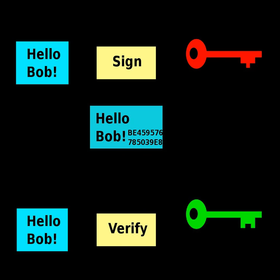G, the key generator, generates a public key P.K. and a corresponding private key S.K. on input 1N, where N is the security parameter. S, the signing algorithm, returns a tag T on the inputs: the private key S.K. and a string X. V outputs accepted or rejected on the inputs: the public key, a string, and a tag. A digital signature scheme is secure if for every non-uniform probabilistic polynomial time adversary, the probability of producing a valid forgery is negligible.